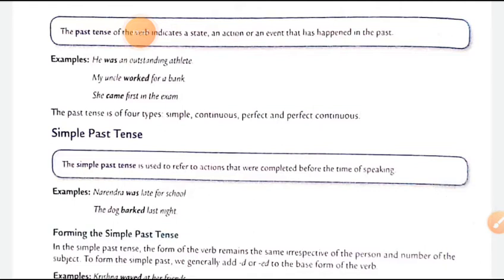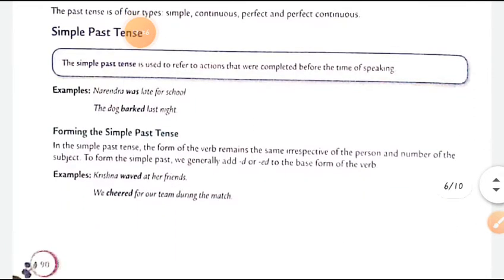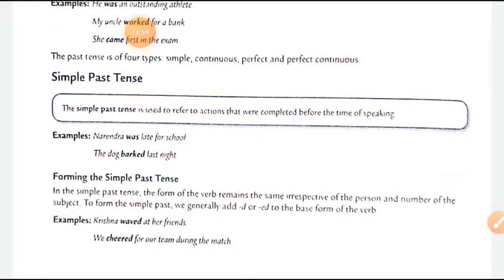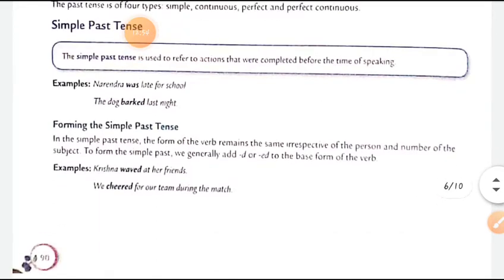The past tense is also of four types — same names as present, but with 'past' instead of 'present.' The simple past tense is used to refer to actions that were completed before the time of speaking. For example: 'Narender was late for school' — pehle tha, ab bata rahe hain. 'The dog barked last night' — ab bata rahe hain lekin kaam last night hua.